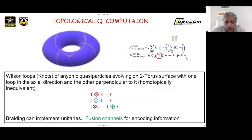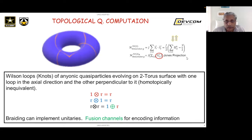Topological computation is a special form of quantum computation — it's very robust and can in principle happen at room temperature. It involves particles evolving on two-toruses, where you create loops with these particles — knots. Out of vacuum, you create a particle and an antiparticle; they evolve and then fuse together into a vacuum — that's a simple knot. You can have multiple knots that overlap, and that interaction can be captured by type 2 matrices.